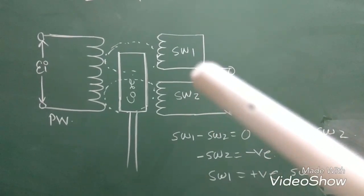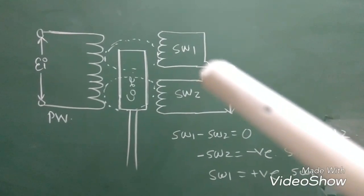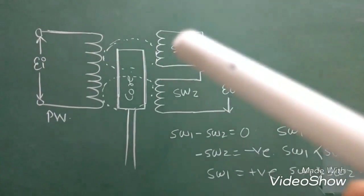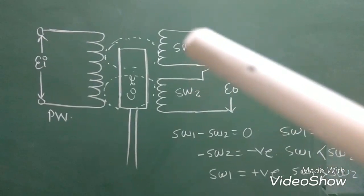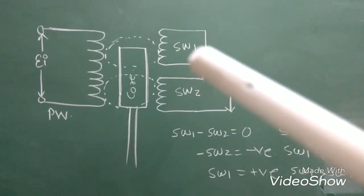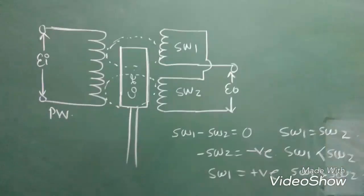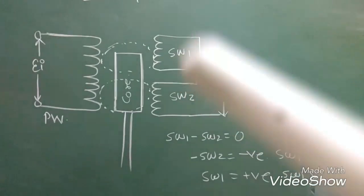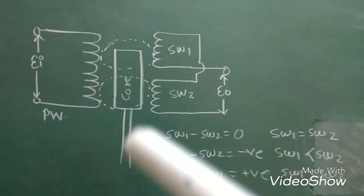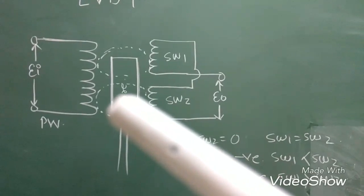The third condition is they must be located at equal distance from the mean position. If the location of secondary winding from the 0 is supposed 3 mm, 3 cm, or 30 cm, the secondary winding must be located at the same distance from the mean line. That is the basic importance and construction of secondary winding. Next, this portion is called the core and this core is generally made up of ferromagnetic material.